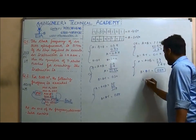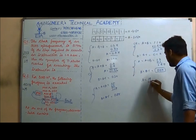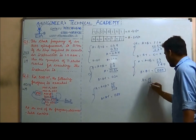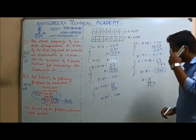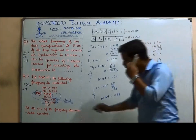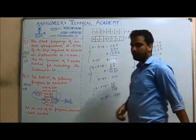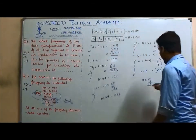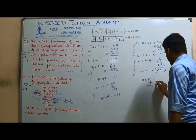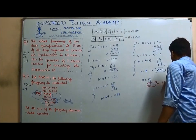ADI 03H means add immediate data 03H into the accumulator. The content of accumulator is 14H and we add 03H, so the new content of the accumulator will be 17H.